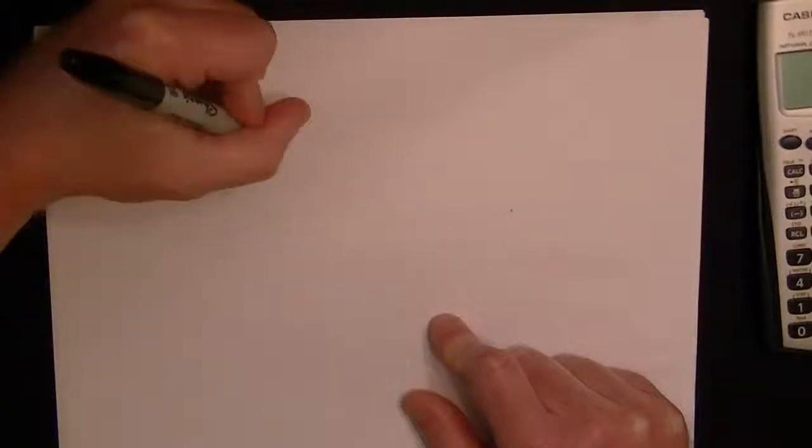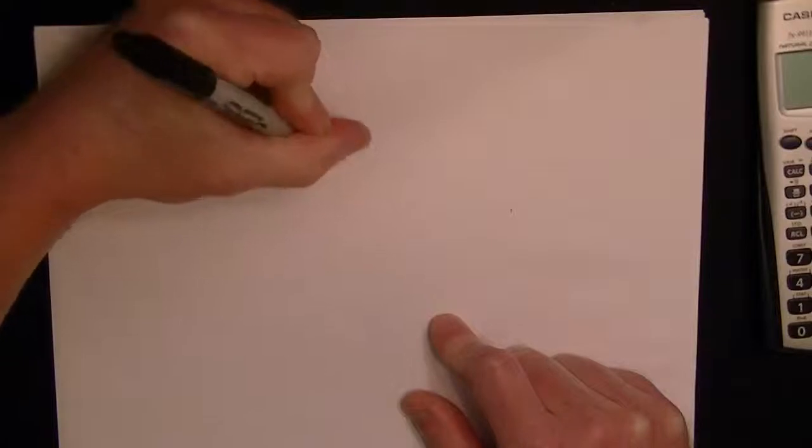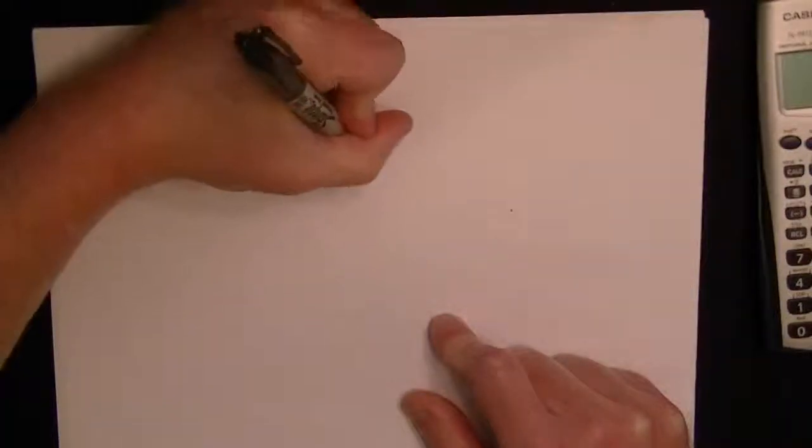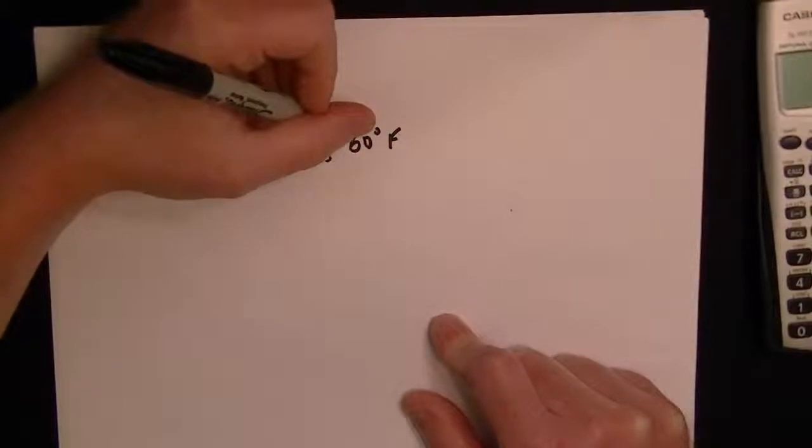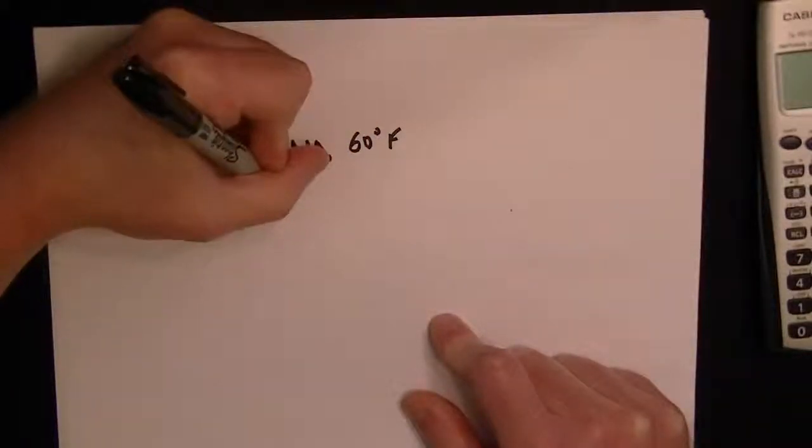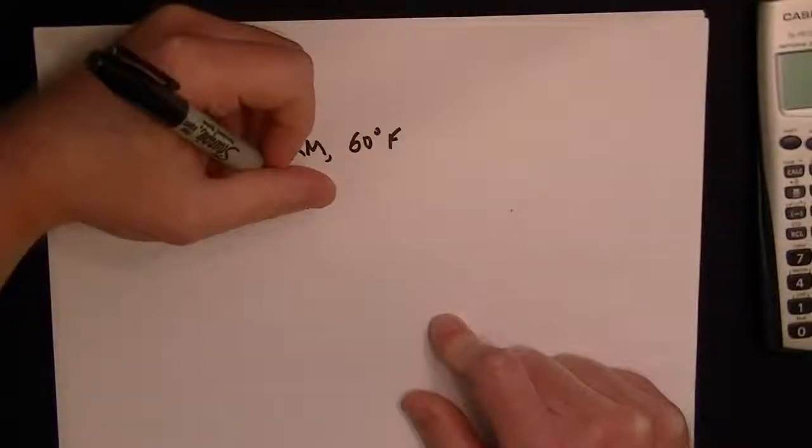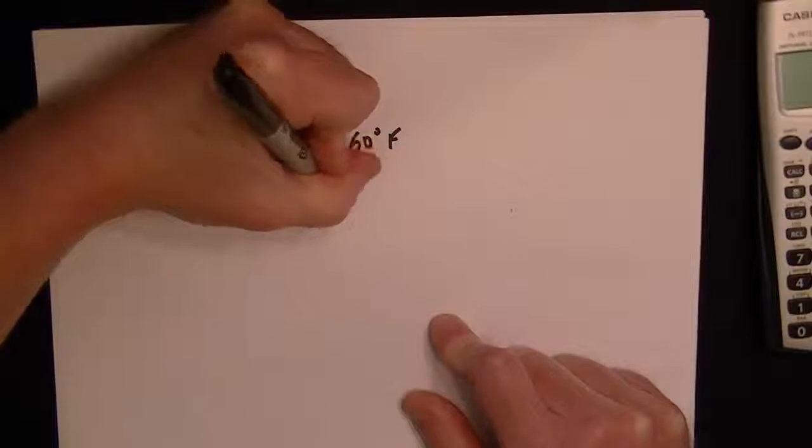We're told about the temperature. So the time is 6 AM and the temp is 60 degrees Fahrenheit. And then they said the temperature rose steadily until it reached a maximum of 85°F at 3 PM.